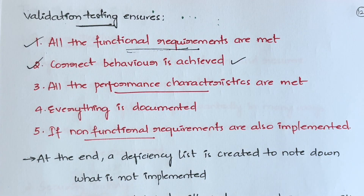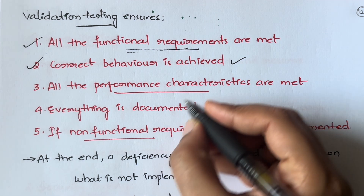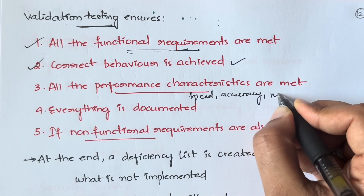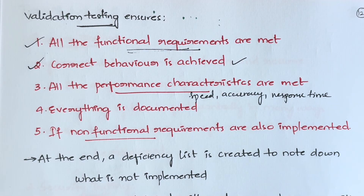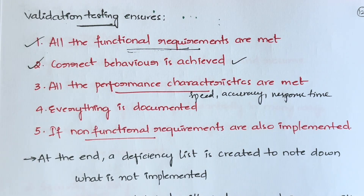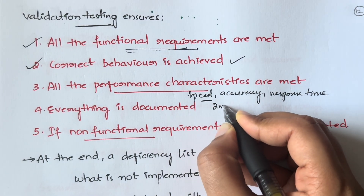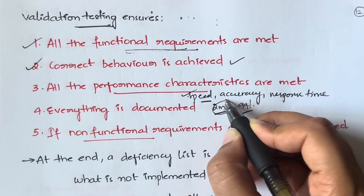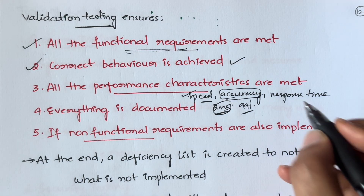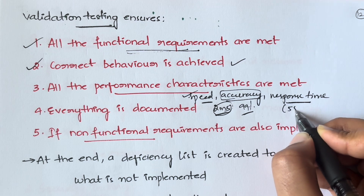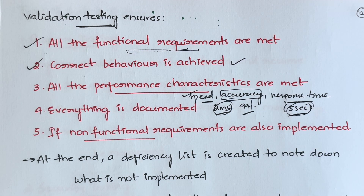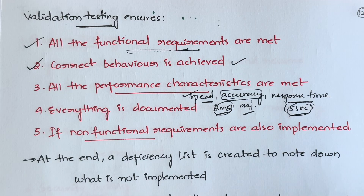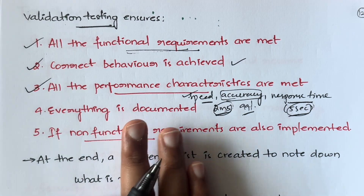All the performance characteristics are also checked — this includes speed, accuracy, precision, response time, and fault tolerance. For example, if you wanted the website to load within 2 milliseconds, it checks whether it is loading within that time. If you want 99% accuracy, it checks whether that's achieved. If you expect a response within 5 seconds, it verifies that too.